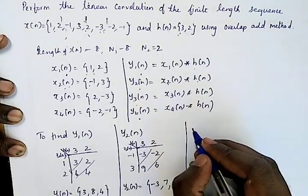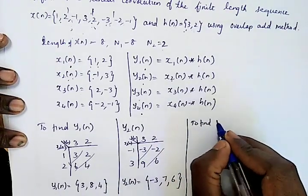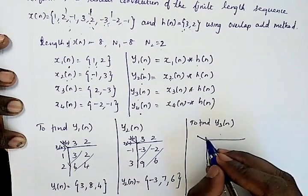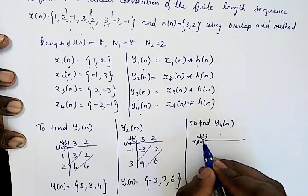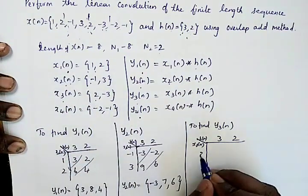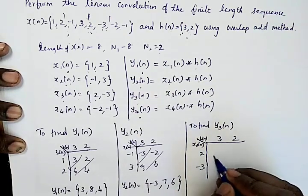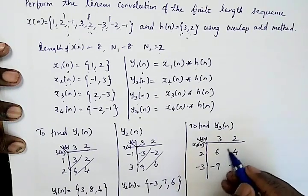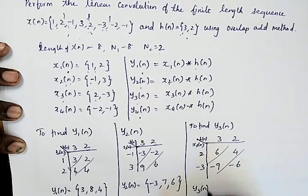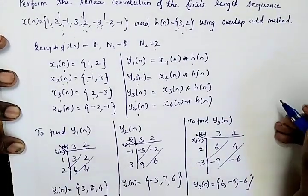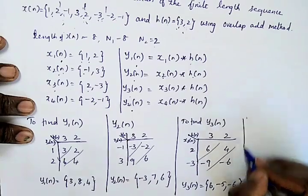Now we find y3[n] = x3[n] convolved with h[n]. Here h[n] = {3, 2} and x3[n] = {2, -3}. Multiplying: 2 times h[n] gives {6, 4}, and -3 times h[n] gives {-9, -6}. Adding diagonally, y3[n] = {6, -5, -6}.